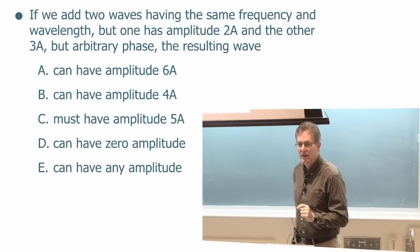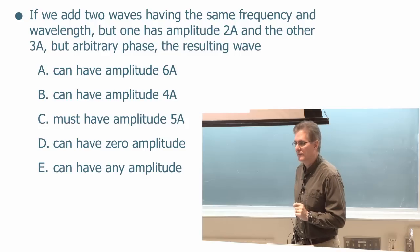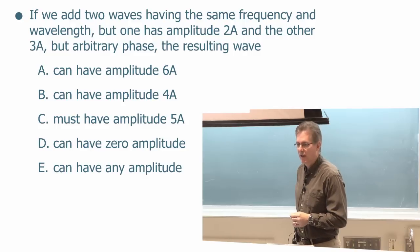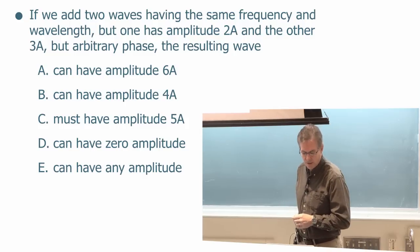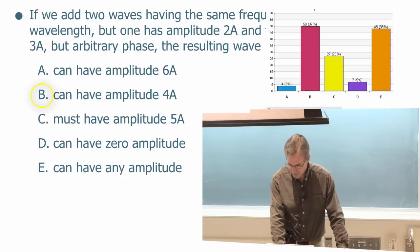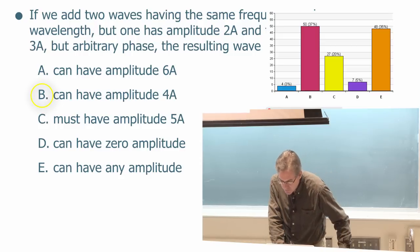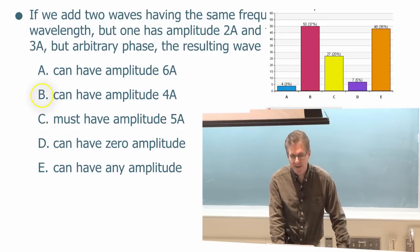Interesting one is D. Can you get 0 amplitude by adding 2 waves with amplitude 2 and 3 times a? The answer is no, you cannot. There's no way to cancel off an amplitude of 3 by adding something with an amplitude of 2 to it, even if you have it totally negative. So yes, the correct answer must be B. Let's see how we did. Ooh, sort of an even split between B and E. People are attracted to that E answer. I don't quite get it, but okay.